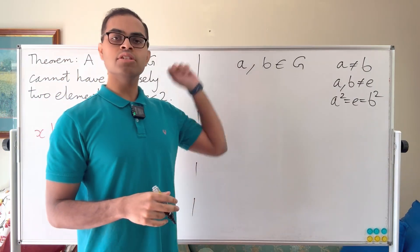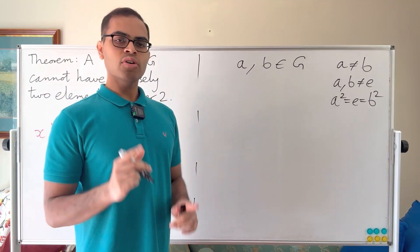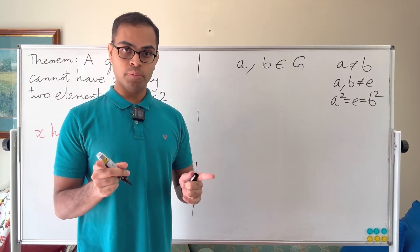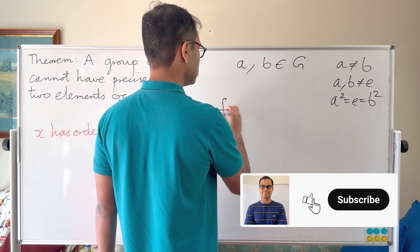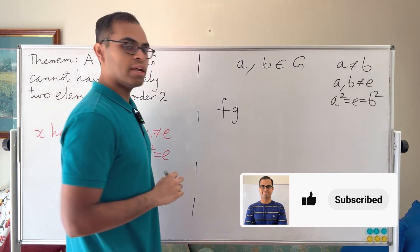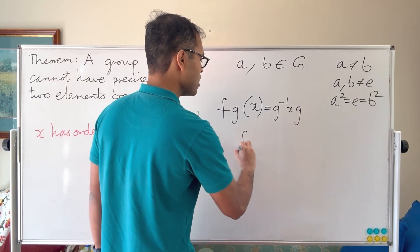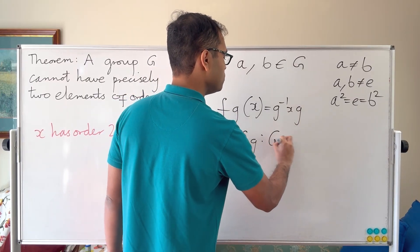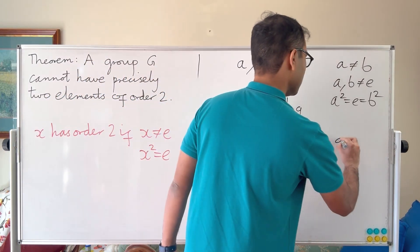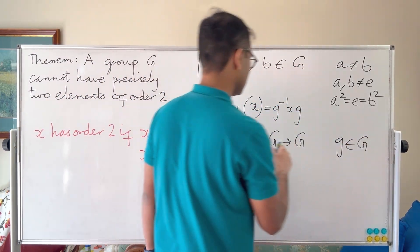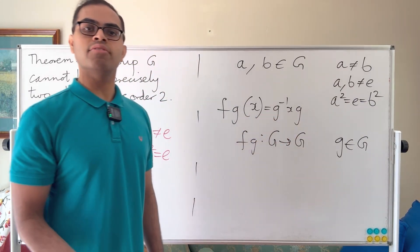We're going to assume for a contradiction that there are precisely two elements of order 2 and work from there. The first trick — and this is a key group theory conceptual point — is the idea of an inner automorphism. Specifically, f_g(x) = g⁻¹xg. This is a function f_g from the group G to itself: you fix an element g and get a function sending each x to g⁻¹xg — this is conjugation by g.